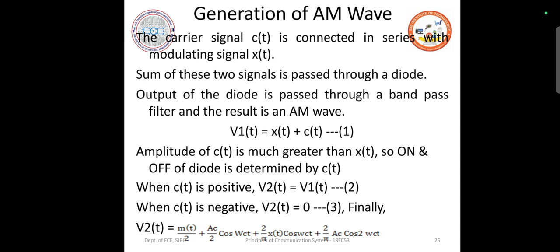When c(t) is positive, V2(t) equals V1(t). When c(t) is negative, V2(t) equals 0.